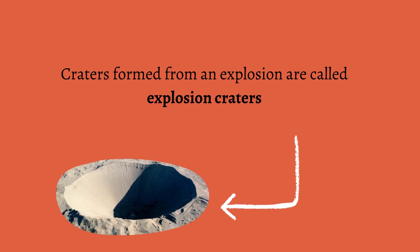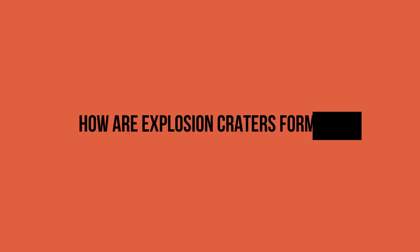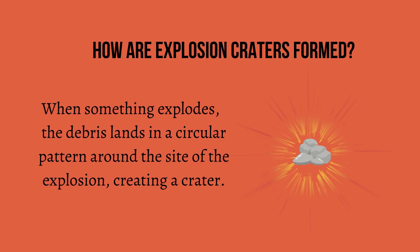Craters formed from an explosion are called explosion craters. Then how are explosion craters formed? When something explodes, the debris lands in a circular pattern around the site of the explosion, creating a crater.